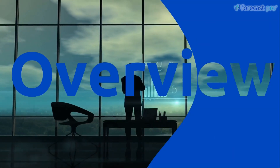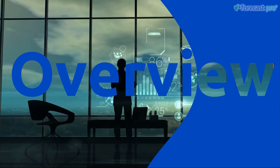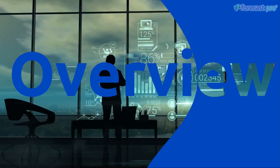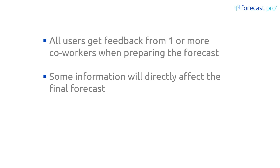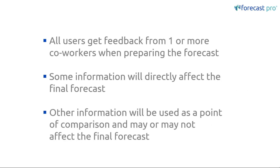Now let's discuss an overview of overrides and collaboration. In discussions with our Forecast Pro users, everyone gets feedback from at least one, and in most cases, multiple sources of information. This information is helpful for generating the best, most accurate forecast possible. Some of this information coming in will directly affect the final forecast, but in other instances, this information is helpful when viewed against the forecast, as well as in calculations to come to a final consensus forecast.